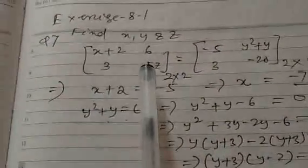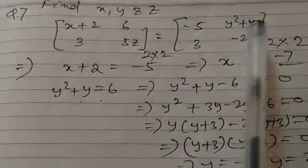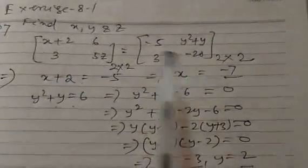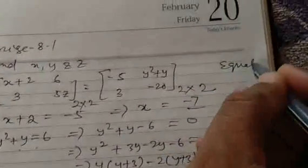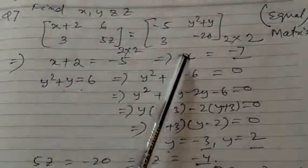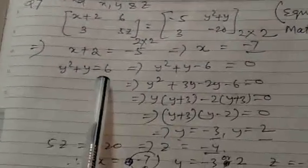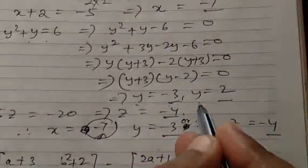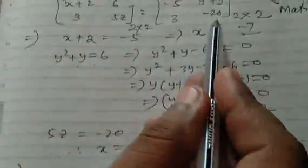Find the value of x, y, and z. We have [x+2, 6 / 3, 5, z] equal to [−5, y²+y / 3, −20]. Since both matrices have the same order, they are equal matrices and their corresponding elements are equal. Therefore, x+2=−5 gives x=−7; y²+y=6, which gives y²+y−6=0, splitting the middle term gives y=−3 or y=2; and 5z=−20 gives z=−4. Thus, x=−7, y=−3 or 2, z=−4.